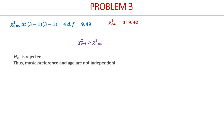With three categories under each attribute, degrees of freedom = (3−1)×(3−1) = 4, giving a table value of 9.49 at 5% level. The calculated value is much greater than 9.49, so H0 is rejected — music preference and age are dependent, not independent. Let us do one more problem before we wind up this video.